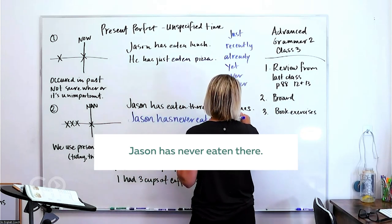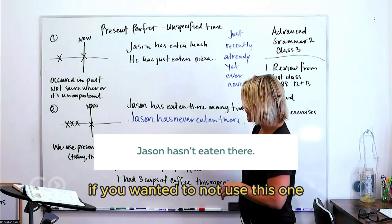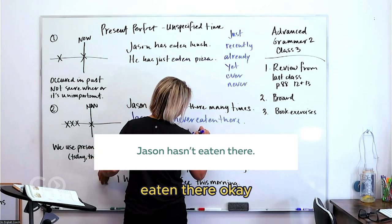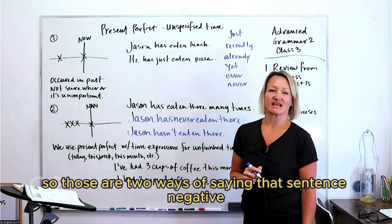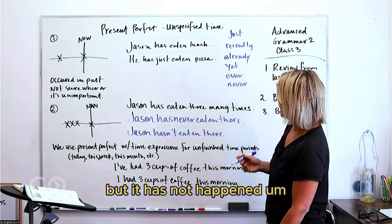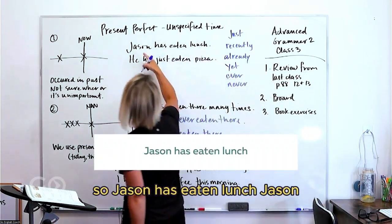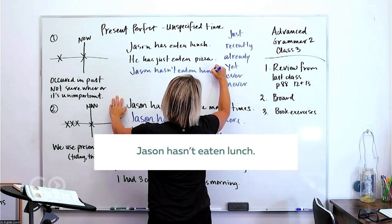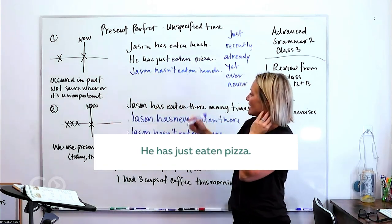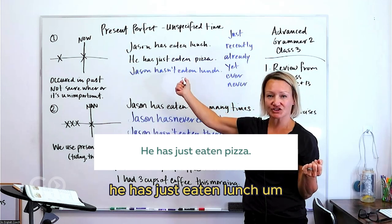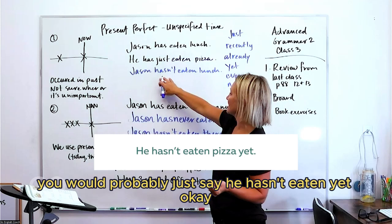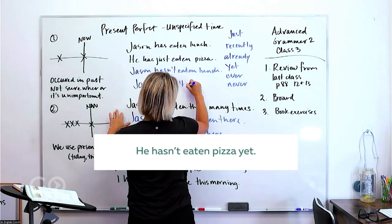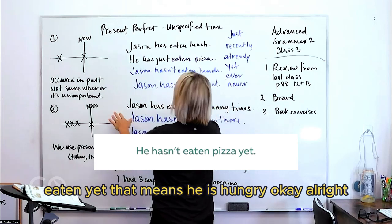For the negative, we can say 'Jason has never eaten there,' or you could say 'Jason hasn't eaten there.' Those are two ways to make that sentence negative. Similarly, 'Jason has eaten lunch' becomes 'Jason hasn't eaten lunch.' And if you want to use 'yet,' you'd say 'Jason hasn't eaten yet' — which means he is hungry.